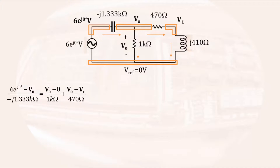We can then write an equation at the top right-hand node. The current through the 470 ohm resistor enters the node, and the current through the inductor leaves the node. Writing those currents as a difference in node voltages divided by the resistance, or an impedance, gives us our second equation.